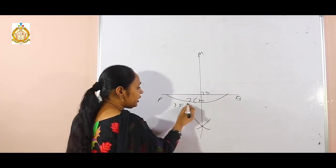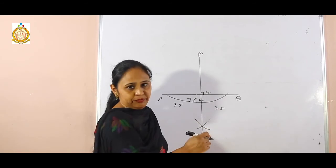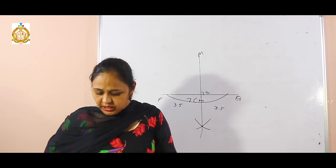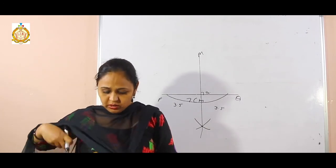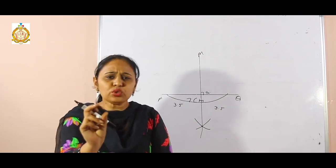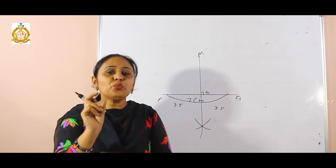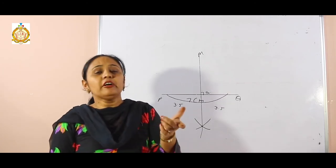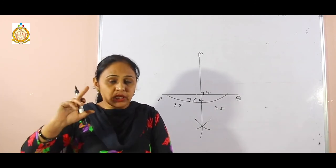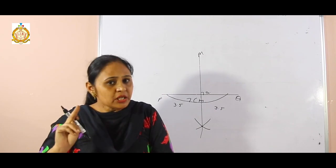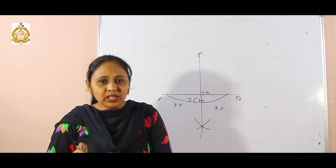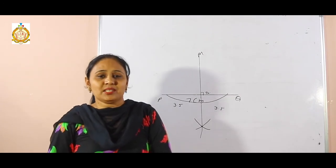The key concept: when we draw a semicircle, that represents 180 degrees. With the same radius, when we start the arcs, that gives the angle of 60 degrees. Where the arc cuts the semicircle, that point we have to use. Thank you — please try to do the sums.